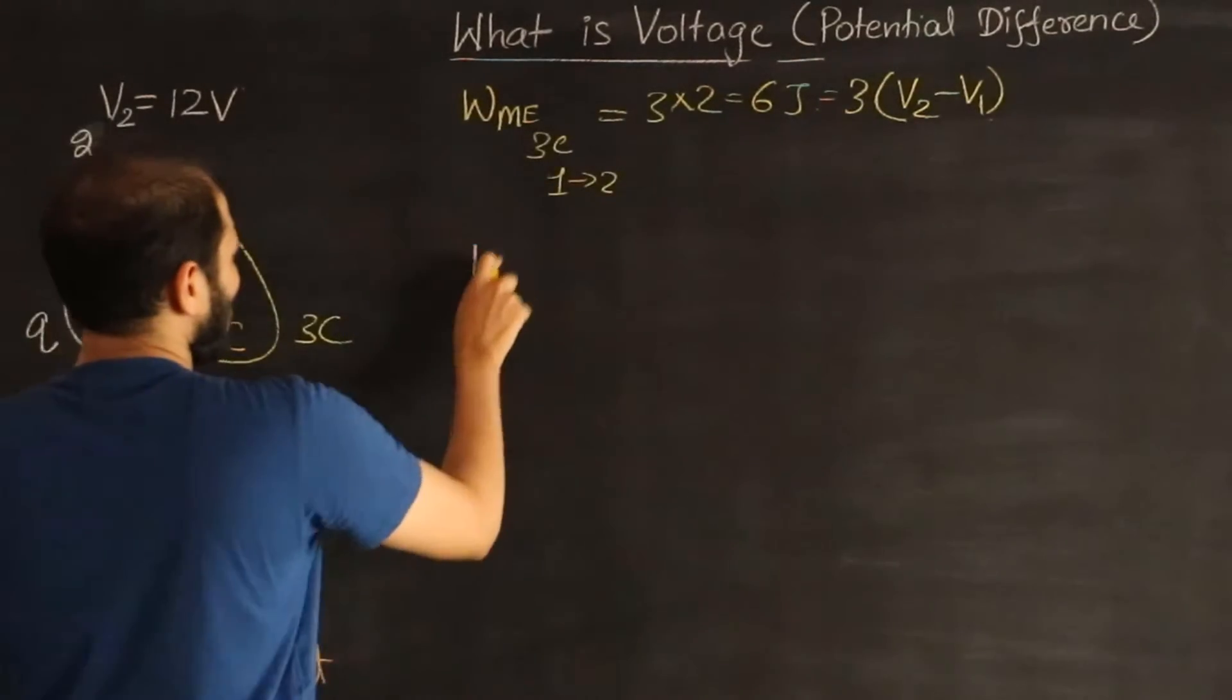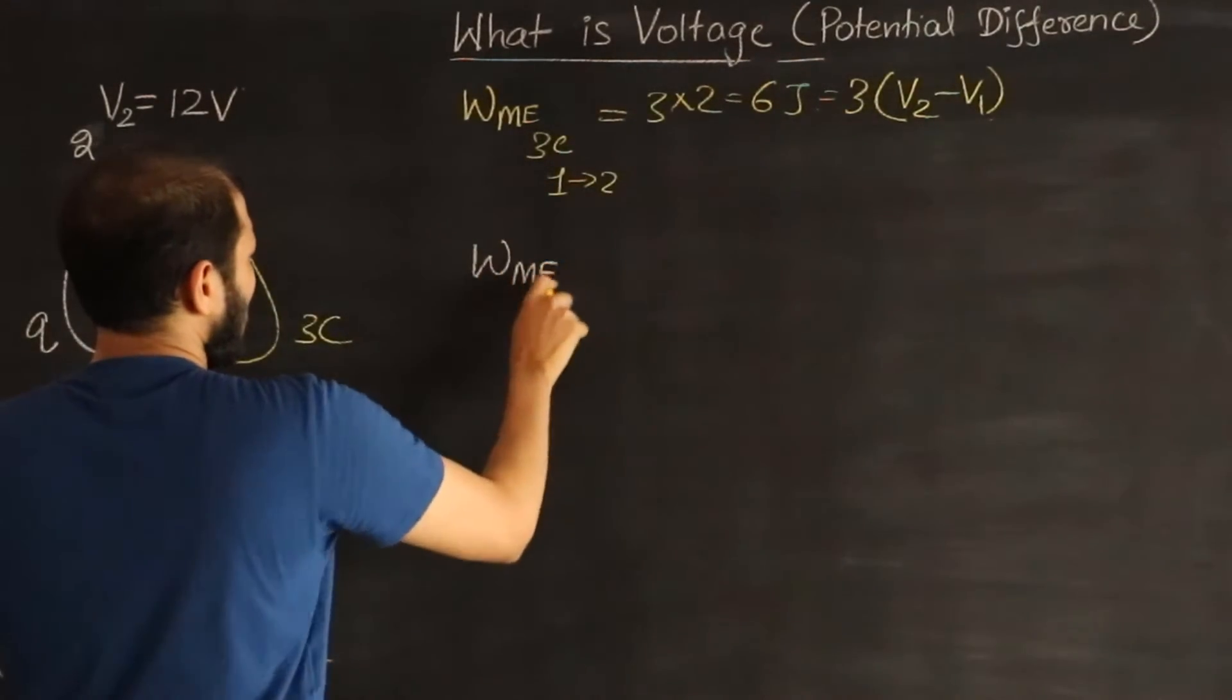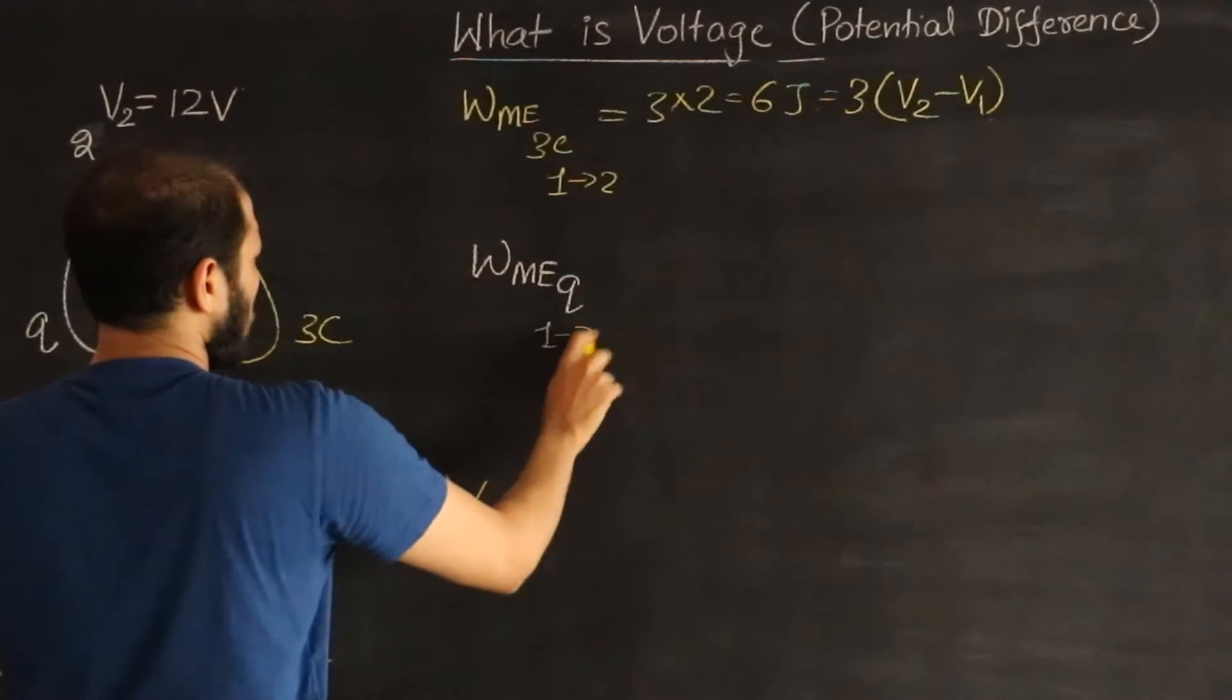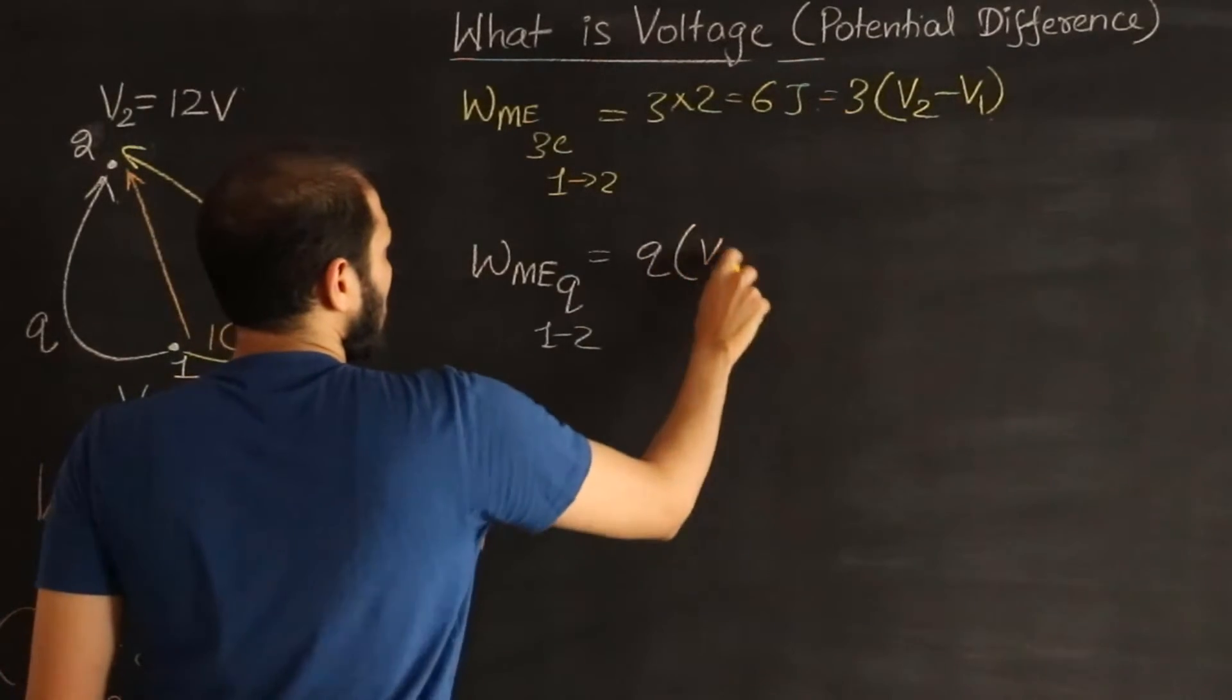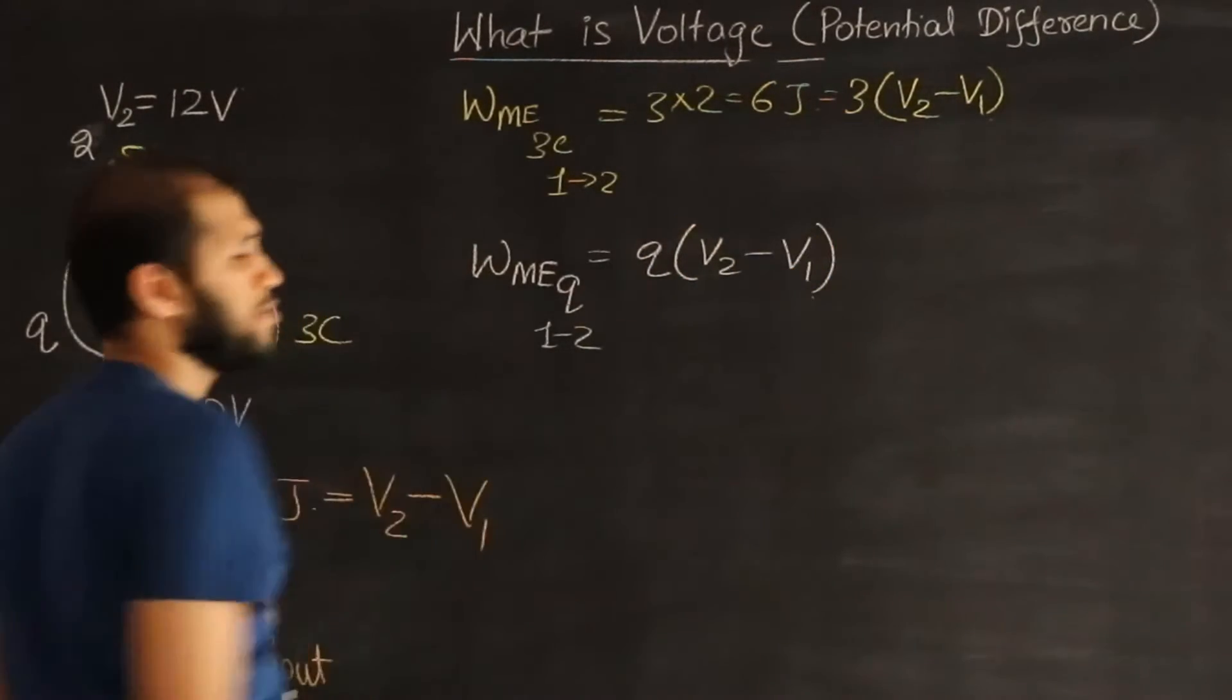Now the work done would be, to move the charge Q from 0.1 to 0.2, would be Q times V2 minus V1.